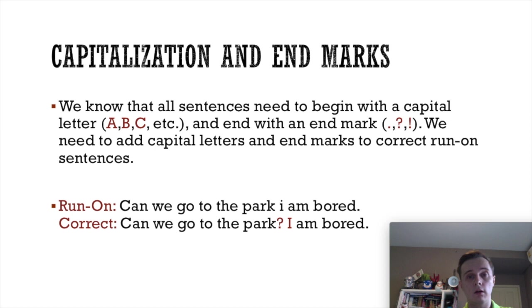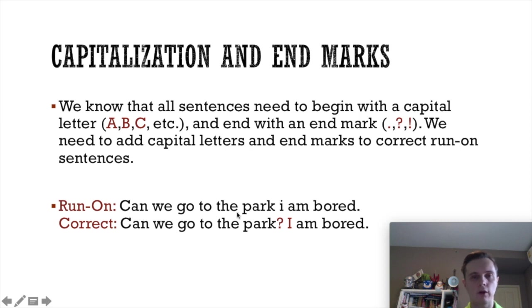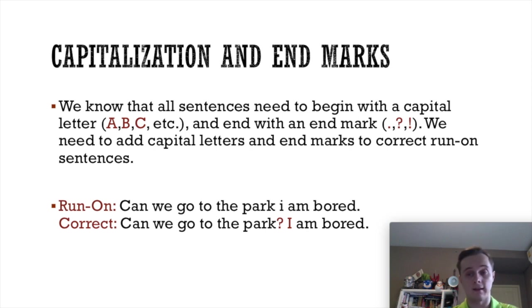All sentences need to start with a capital letter and end with an end mark — a full stop, a question mark, or an exclamation point. We need to add capital letters and end marks if we ever see a run-on sentence, so that we can separate it into two correct sentences. So for example: "can we go to the park I am bored" — we correct it by adding a question mark after "park" and capitalizing "I" for the start of the new sentence.